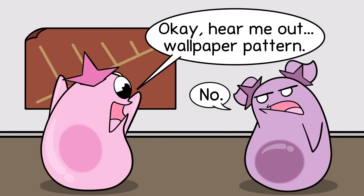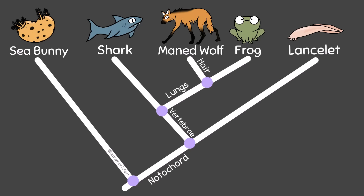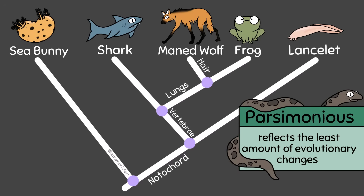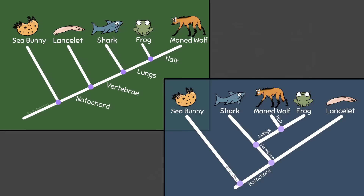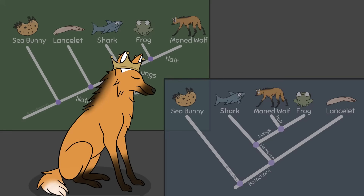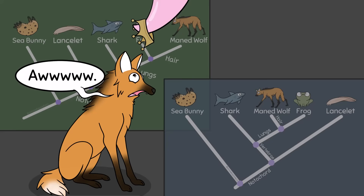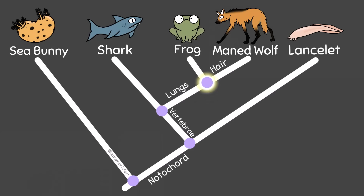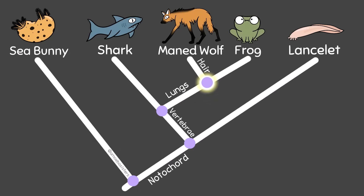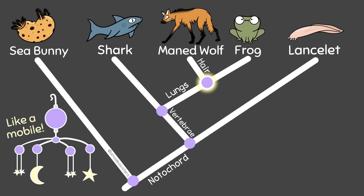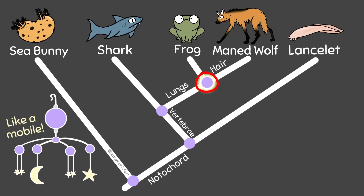While I used the simplest branching pattern possible for this cladogram, it isn't the only branching pattern that exists. For example, notice how I could change the branching pattern to look like this. This rearrangement is still considered parsimonious — still reflecting the least amount of evolutionary changes — though it's not as simple as my linear branching pattern. I want you to notice this rearrangement because some students think cladograms are showing different levels of evolution, but cladograms show how lineages diverge in common ancestry. I could even switch the maned wolf and frog — these tips can rotate around their node without changing the evolutionary relationships they represent.